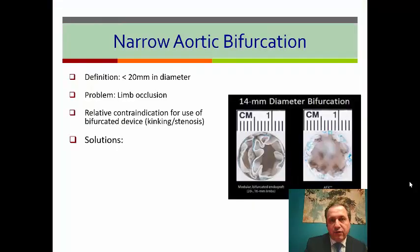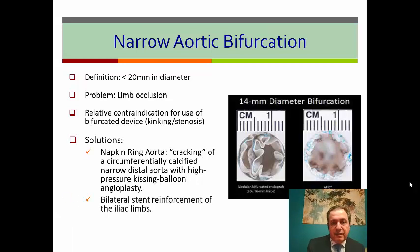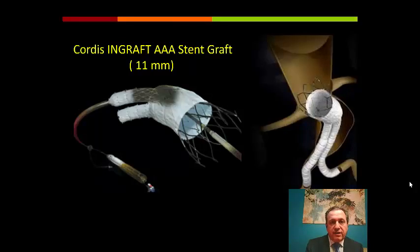What if we have a narrow aortic bifurcation — less than 20 mm in diameter? The problem is it can cause limb occlusion. Solutions: we can crack the calcifications using kissing balloon after EVAR deployment so the EVAR protects against rupture, and sometimes use bare metal stent reinforcement of the iliac limbs to keep them open. Or we can use an aorto-uni-iliac graft and perform fem-fem bypass. Another option is the Endologix EVX unilateral graft, where the main body sits at the aortic bifurcation. A newer solution is the Cordis engraft AAA stent graft, which has a low profile and no IFU restriction for distal aortic bifurcation — the company says you can use it down to even 11 mm of distal aorta.